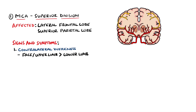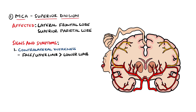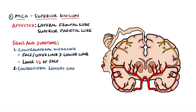This is because of the motor homunculus, where the areas of the cortex responsible for the legs are supplied more so by the anterior cerebral artery and so are less affected in middle cerebral artery strokes. Also, only the lower part of the face is affected because it only receives unilateral innervation from the facial nerve, while the upper two-thirds receives bilateral innervation. There is also often a hemi-sensory loss on the contralateral side that may affect the face, arm, or legs.